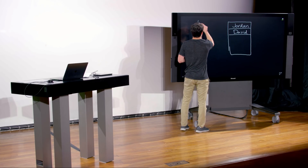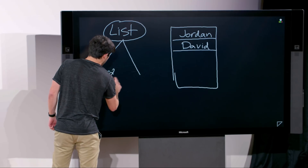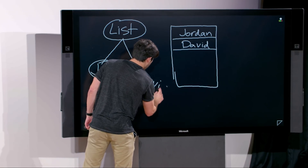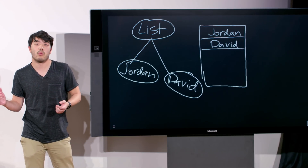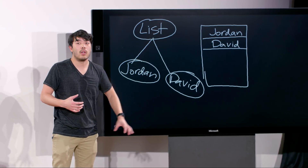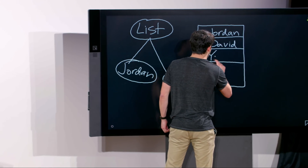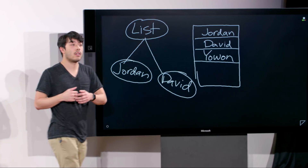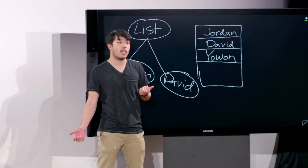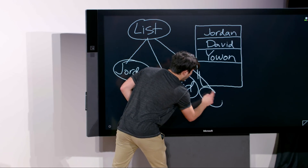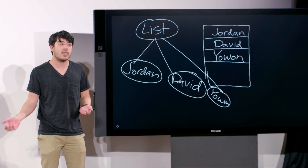Say we have a list with Jordan and David. We might have a list node containing Jordan and David in the React tree. When we add something or re-render, React recalculates this DOM and only does what's necessary. If we add Yohan to the very bottom, it's easy: Jordan and David were where they were before, and we just add Yohan to the bottom. React can see the top two stayed the same and just adds Yohan.